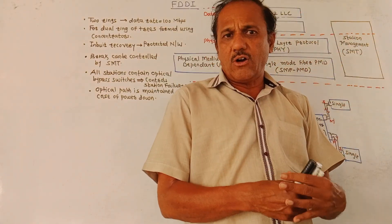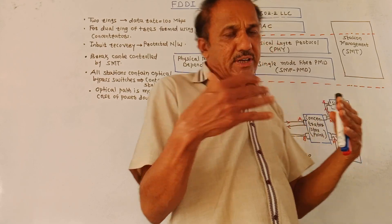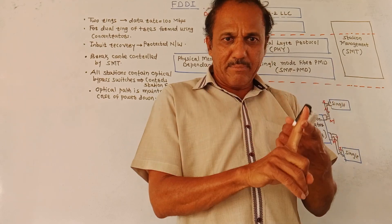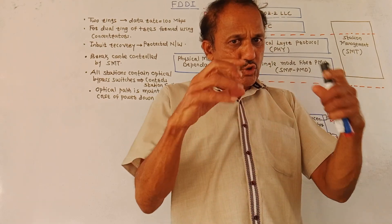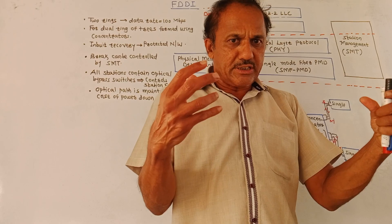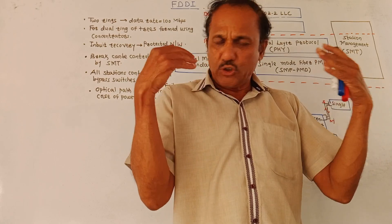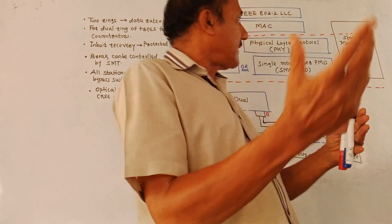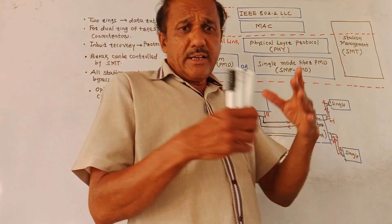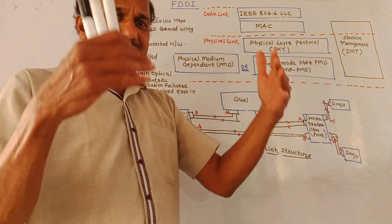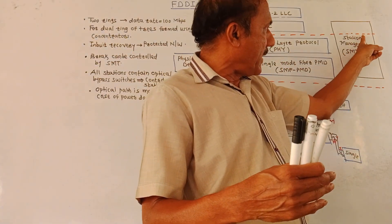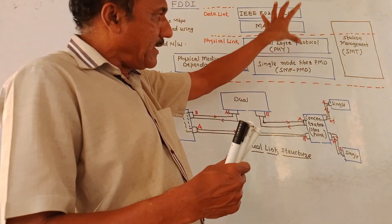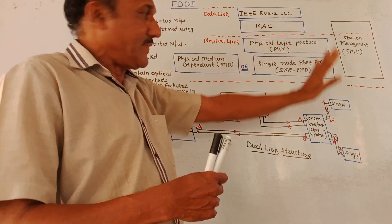This is the station management system. The important criteria of making use of this FDDI interface is that two ring type structures are used. One is primary and another is secondary. Even if any ring structure fails, the total system is not collapsed. The data transmission takes place through the secondary link. That is the major advantage. Even if the station fails, then there are many switches placed in case of SMT, that is station management system. This is a highly reliable system which is used in the LAN network.